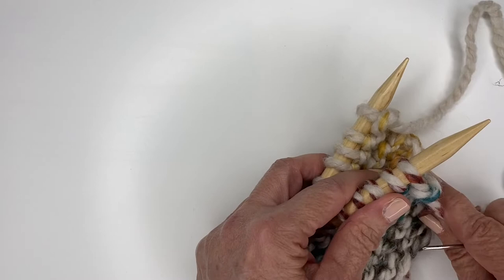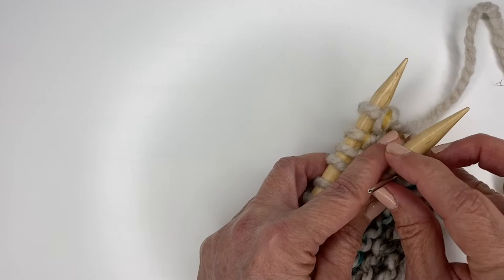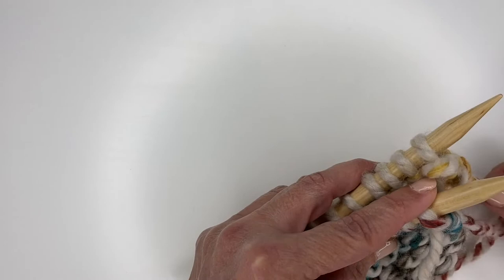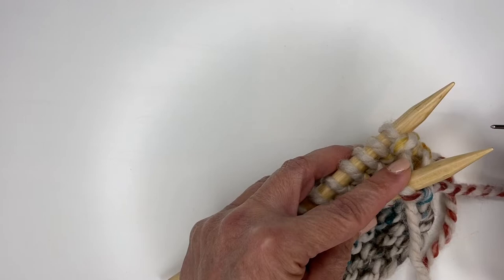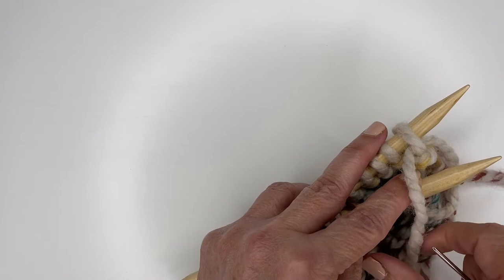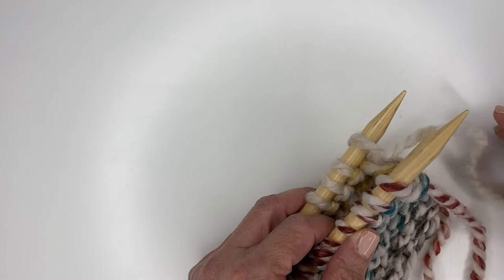Insert your darning needle into the first stitch purlwise and leave it on - we're going to call that purl on. Then you're going to insert your darning needle into the first stitch on the back needle purlwise as well and leave it on. So now your setup is ready. You're going to be working these remaining stitches in sets of two as follows.